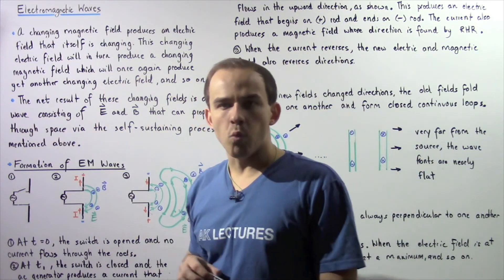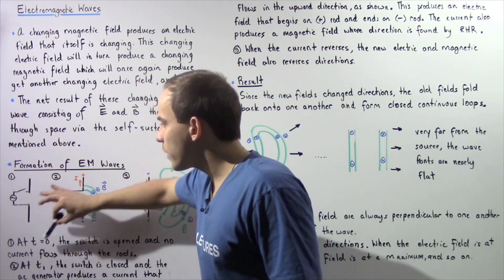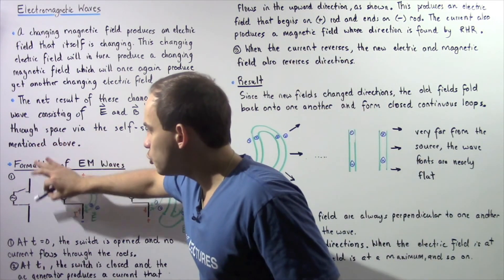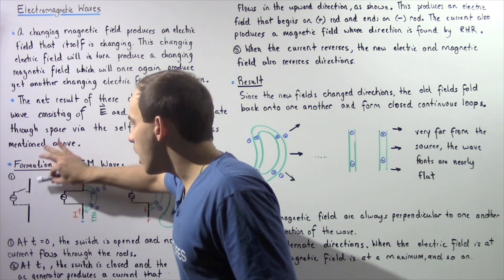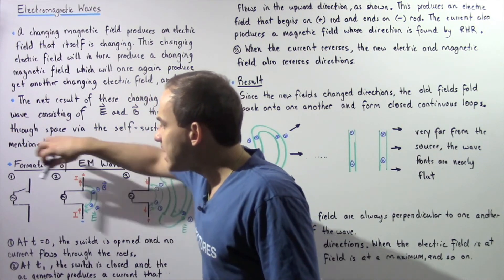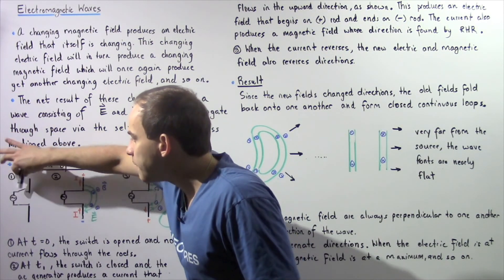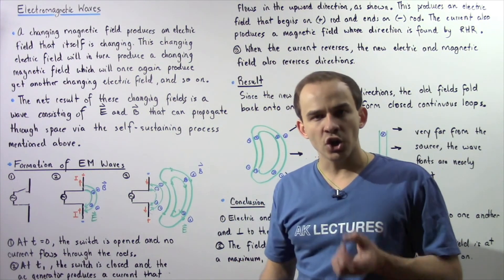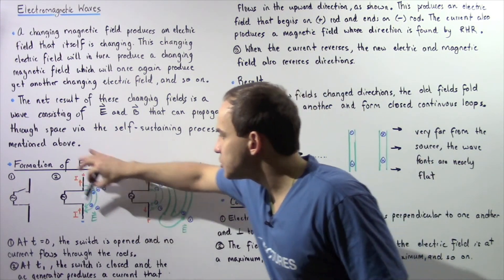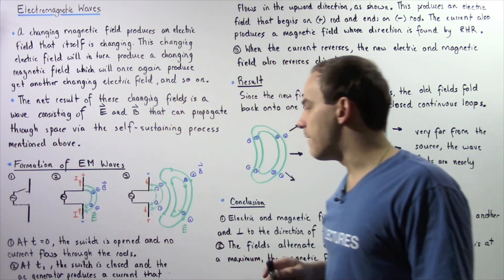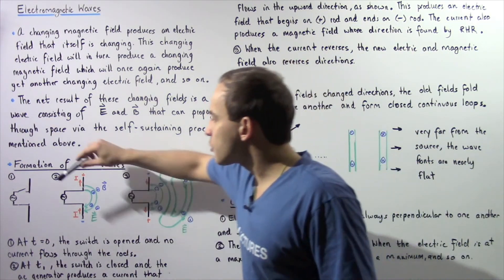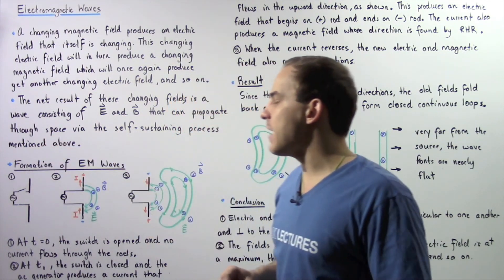In diagram one we have an antenna consisting of two rods — an upper rod and a lower rod — connected to an open switch and an AC alternating current generator. At time zero seconds the switch is open, which implies no electric current will flow through the two rods of the antenna.